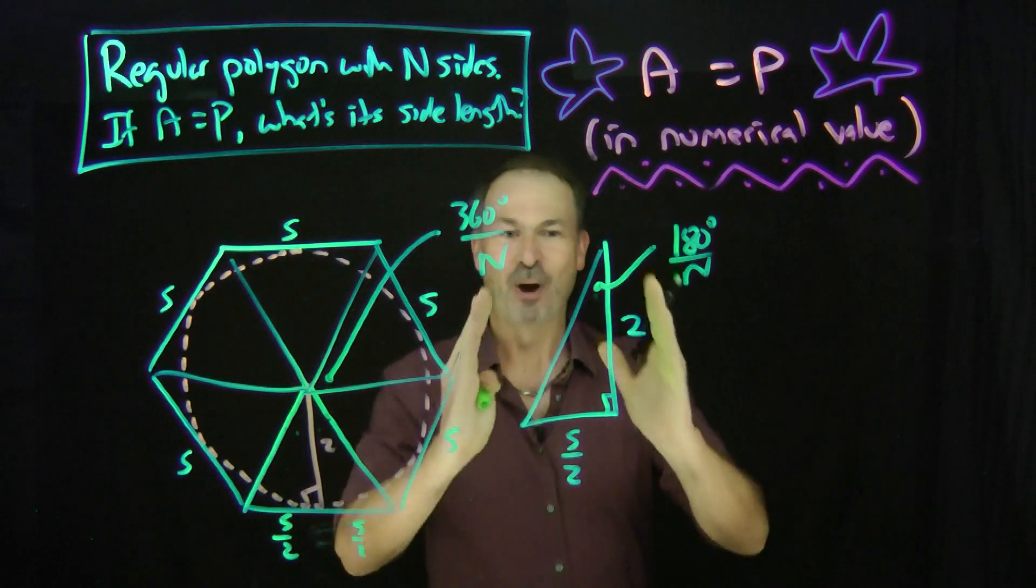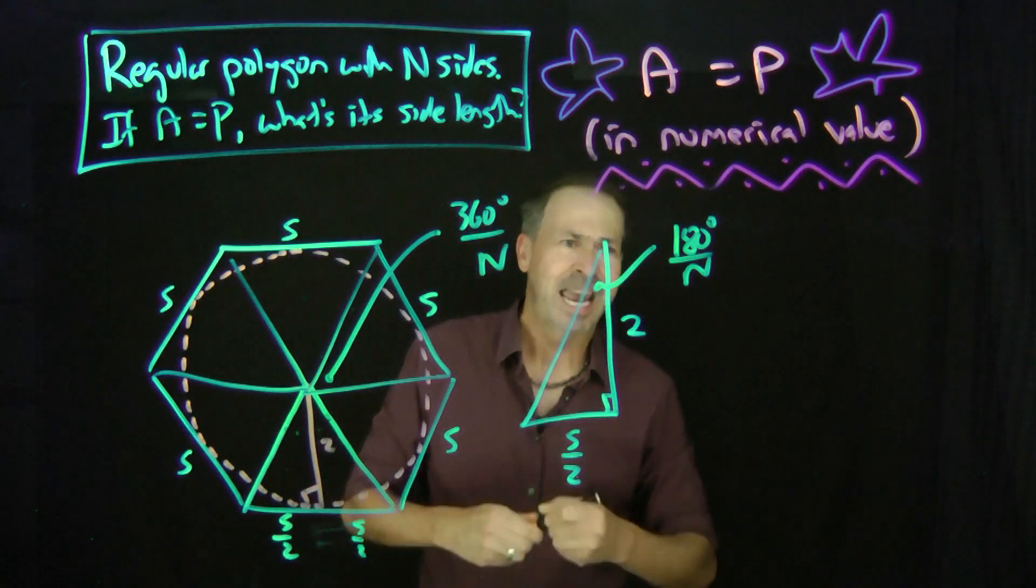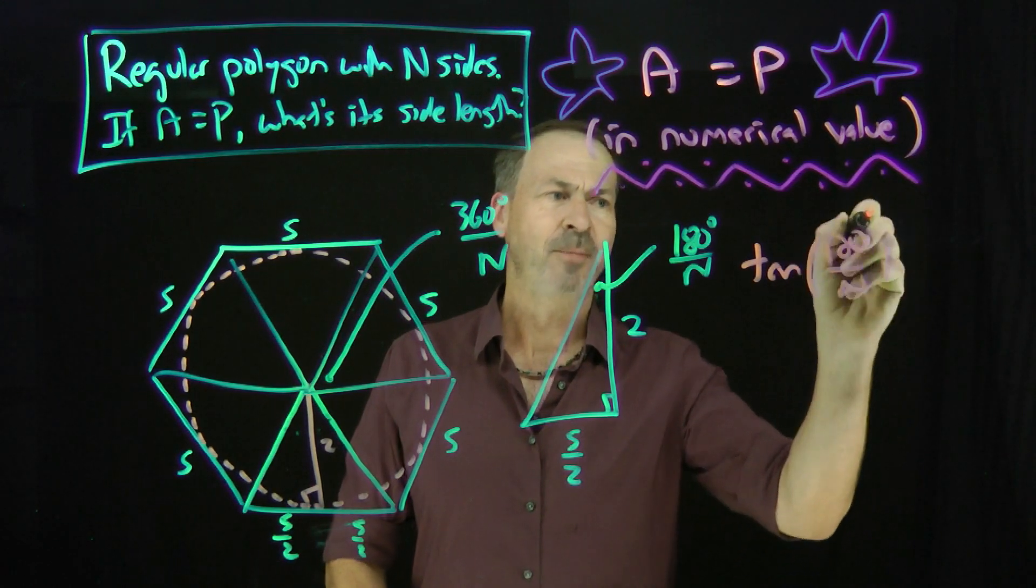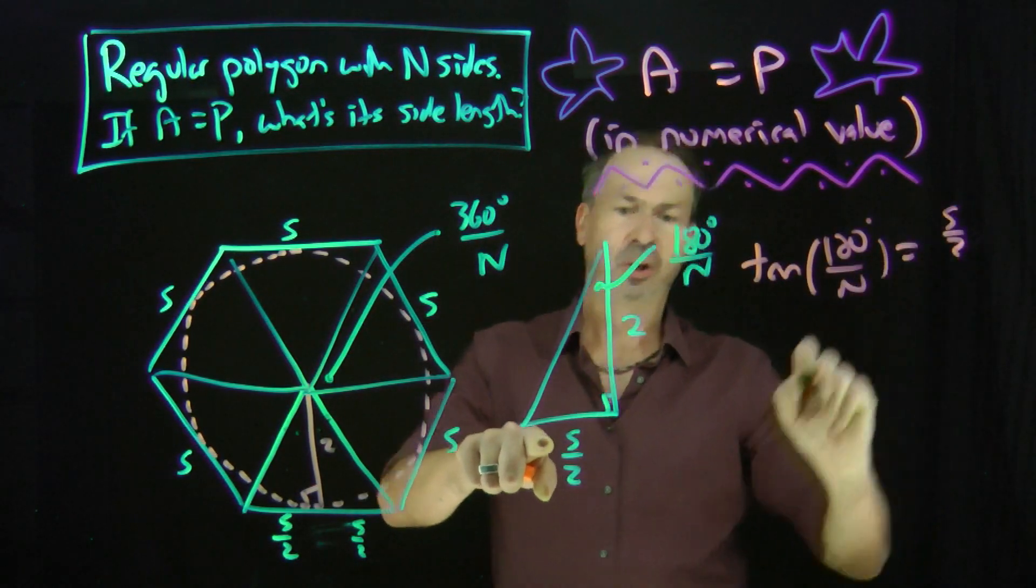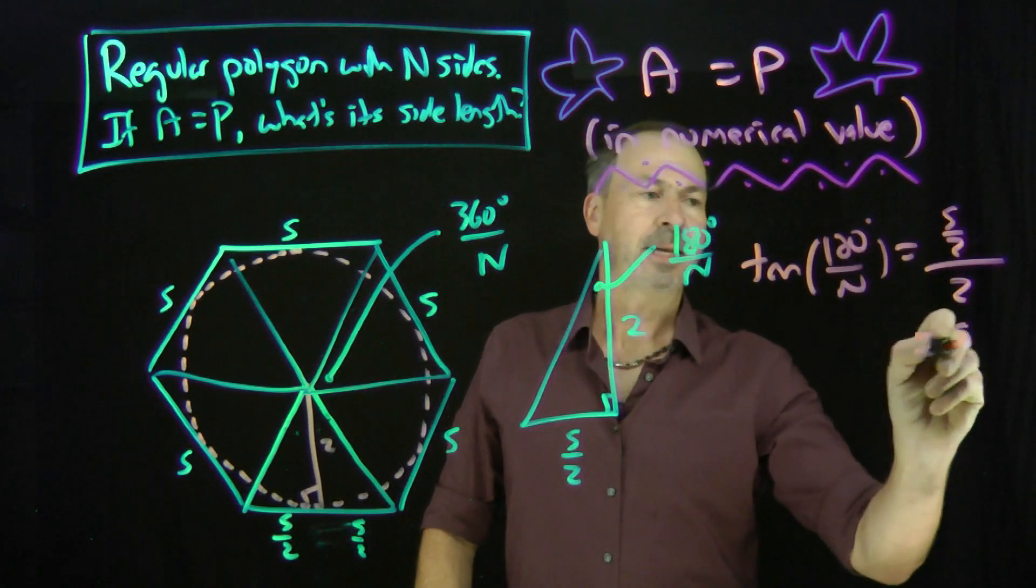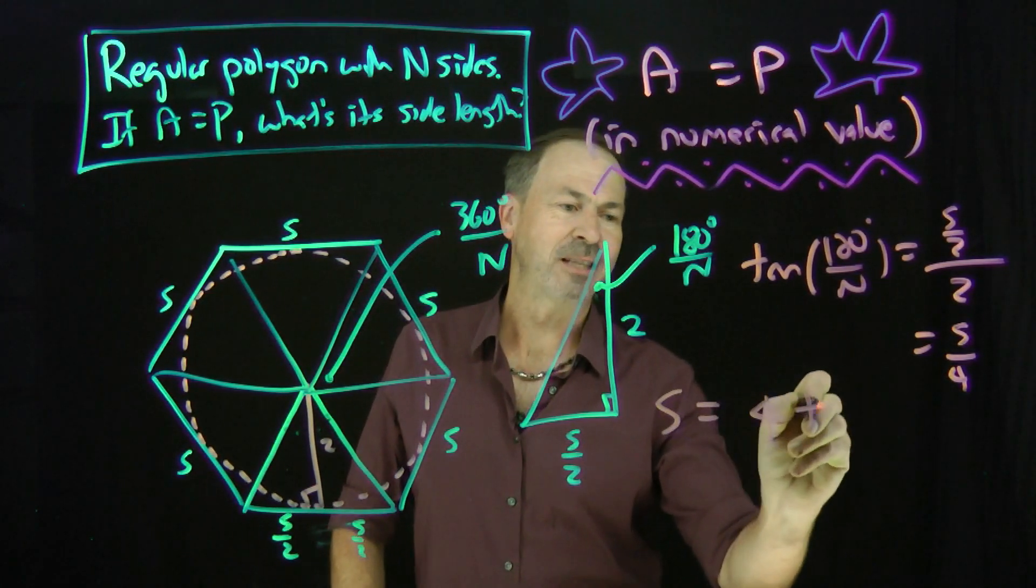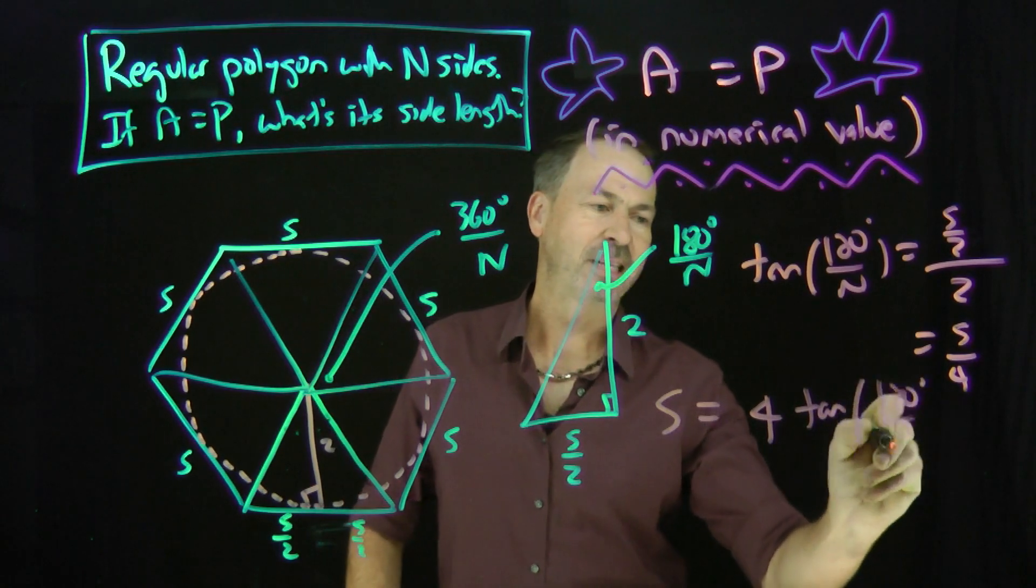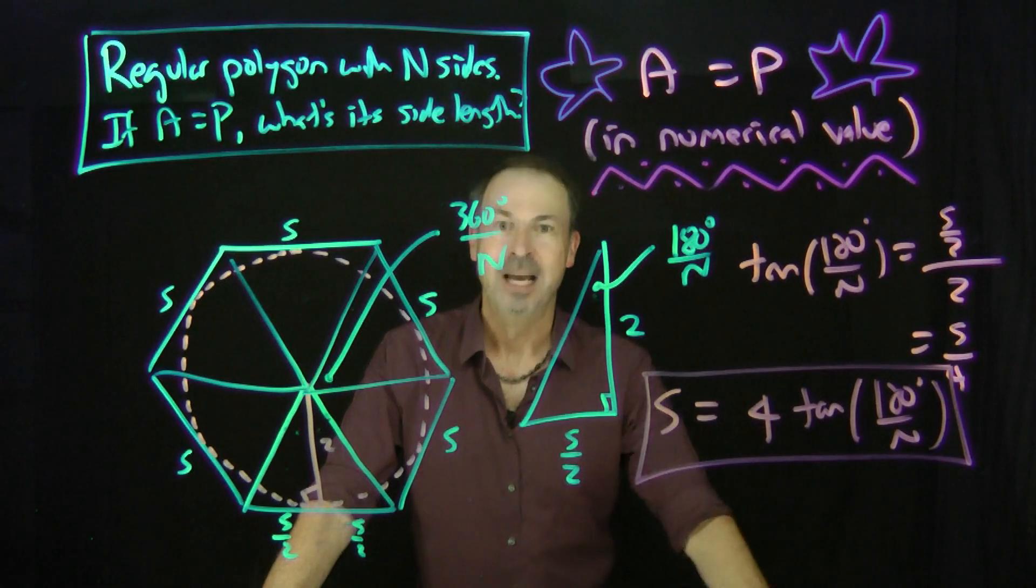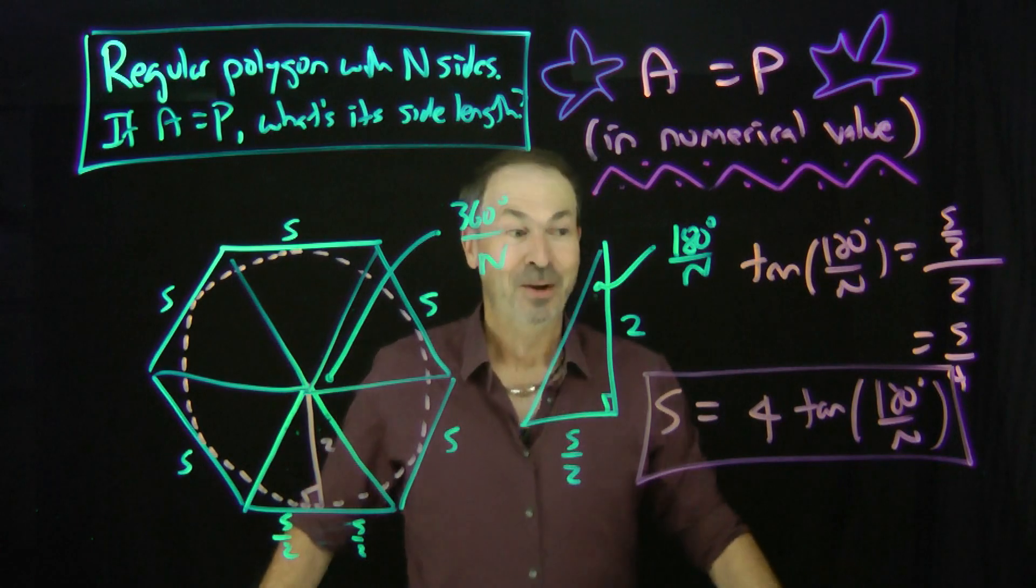Now I've got a right triangle. I've got an angle in it. And it looks like I want to do some trigonometry here. I'm thinking of the tangent function. So I can see right now that the tangent of 180 over N would be S over 2 divided by another 2. So that's S over 4. S over 4 is tangent of that stuff. So that means S all by itself is 4 times the tangent of 180 degrees divided by N. There is a formula for the side length of a regular polygon with N sides having the property that area and perimeter have the same numerical value.